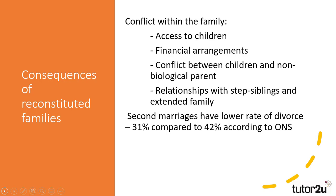However, there is also a positive side to the formation of reconstituted families, with a growing support network and, in some cases, children being presented with a parental figure that had been absent in their lives prior to their parent being in that relationship. Second marriages are also significantly less likely to end in divorce than first marriages — 31% of second marriages end in divorce, compared to 42% of first marriages, according to the Office for National Statistics in 2017.